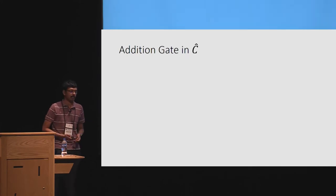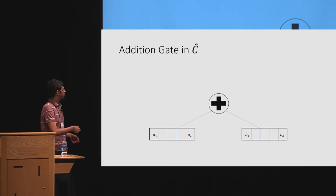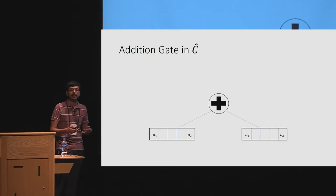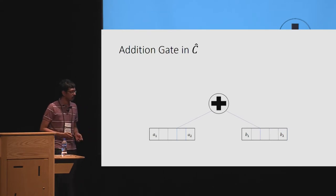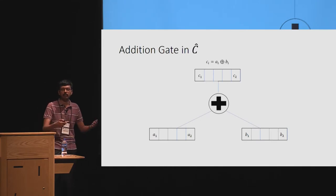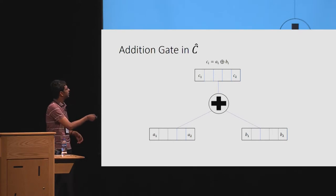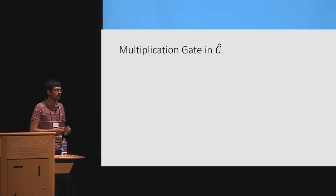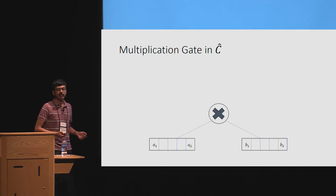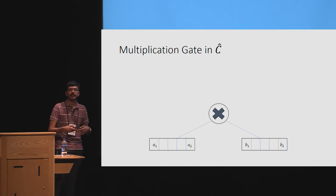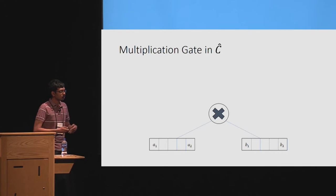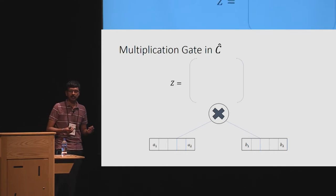Let's see how this invariant is maintained for each gate, starting with the addition gate in C-hat. The addition gate takes in two bundles — the first with parity A, the second with parity B — and must output a bundle with parity A XOR B. This is straightforward: you compute the bitwise XOR of the two bundles, and the parity of the resultant bundle is precisely A XOR B. The interesting case is the multiplication gate. The multiplication gate takes in two bundles with parities A and B, respectively, and must output a bundle with parity A times B.